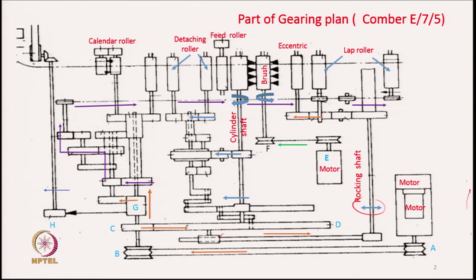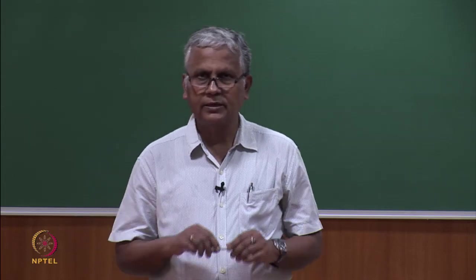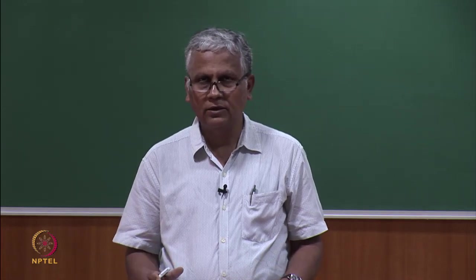From the rocking shaft, motion goes to an eccentric. The lap sheet is passed over this eccentric or cam, and from there the sheet is passed to the feed roller. So the eccentric receives its drive from the rocking shaft. The other part of the rocking shaft's rocking motion is translated into a to-and-fro motion of the entire nipper assembly through a set of levers or links.